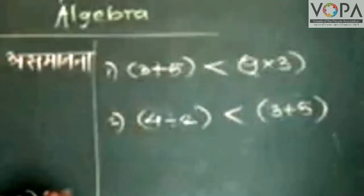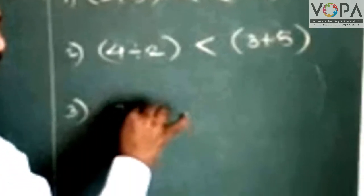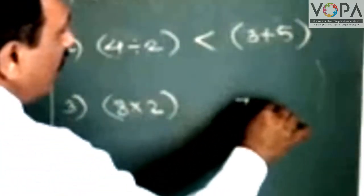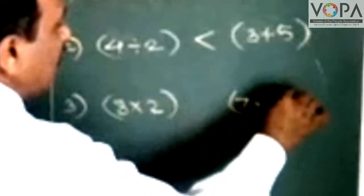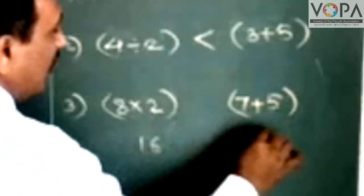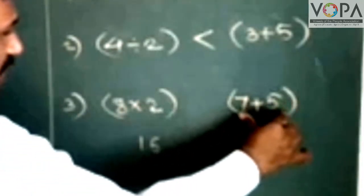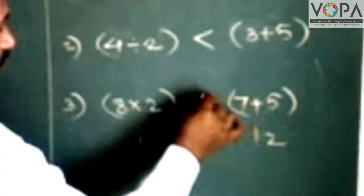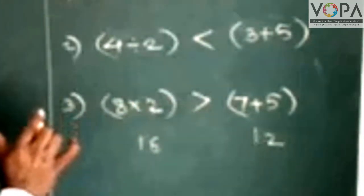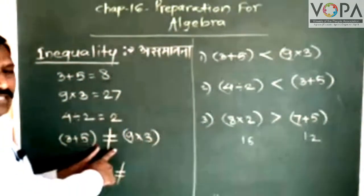Suppose we take a third example: 8 into 2 — the answer is 60, and 7 plus 5 — the answer is 12. The answer of this expression is greater than the answer of this expression, that is 7 plus 5. We can represent this symbolically, meaning inequality can be represented by three ways.